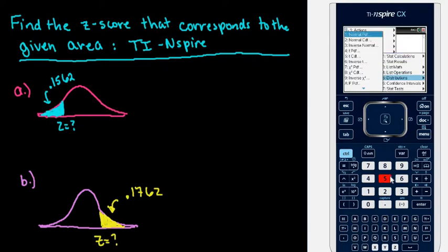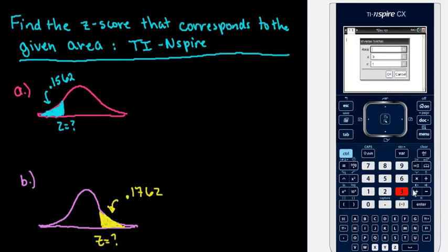In previous videos or in other videos, we used NormalCDF, and NormalCDF is used if you know the z-score or if you know the x-value and you are trying to find the area. For this one, we know the area and we want to find the z-score, so we're going to do what is called the inverse normal, so it's the opposite. It does the opposite of what we've been doing.